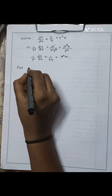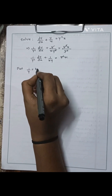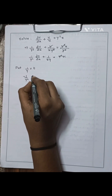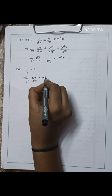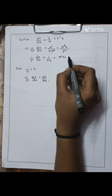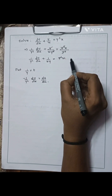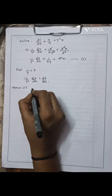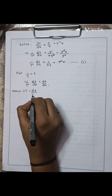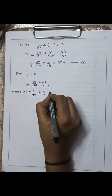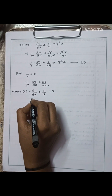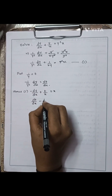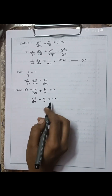We will put 1/y = t. Differentiating this equation, we get −1/y² · dy/dx = dt/dx. Now the equation becomes −dt/dx + t/x = x. Shifting the negative sign, we get dt/dx − t/x = −x.